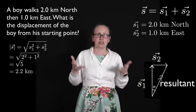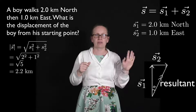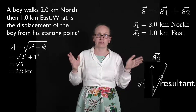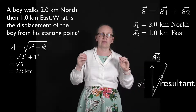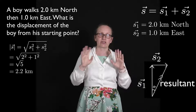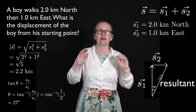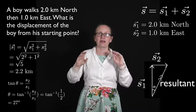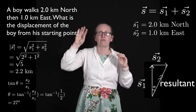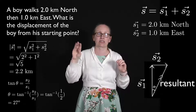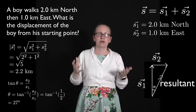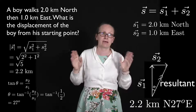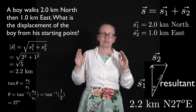Because it's a vector we also need to give the direction, so we need to work out our angle. We label theta on our triangle and, since it's a right-angle triangle, we can use SOH-CAH-TOA. Here we have the adjacent and the opposite, so we use the TOA part — tan. Tan theta equals the magnitude of the second vector divided by the magnitude of the first vector. So theta equals the inverse tan of 1/2, which gives us 27 degrees. The resulting displacement is 2.2 kilometres at north 27 degrees east.